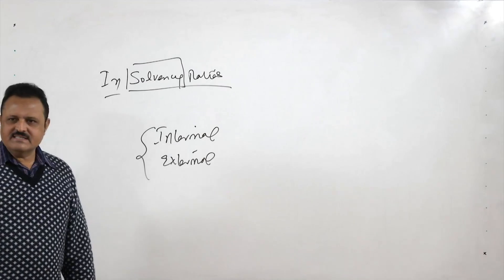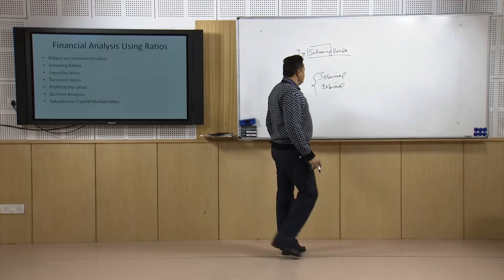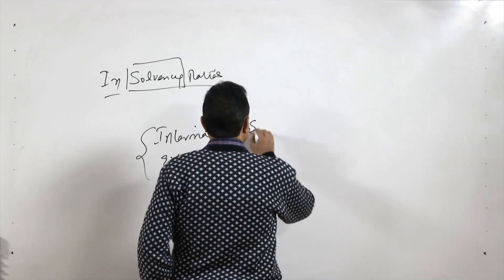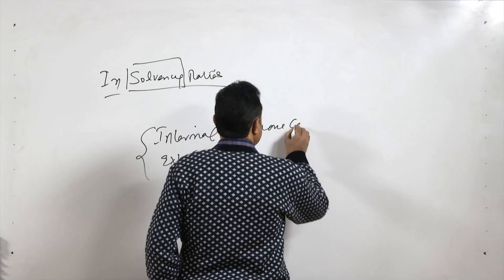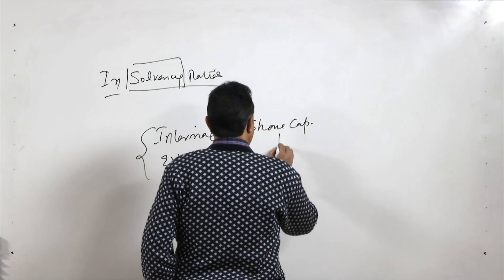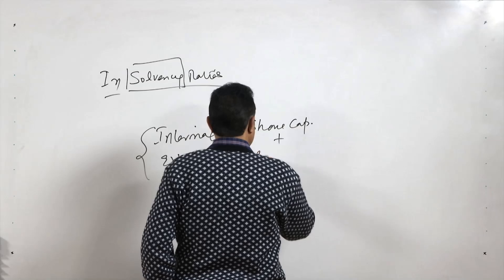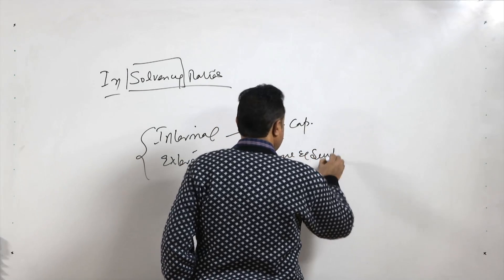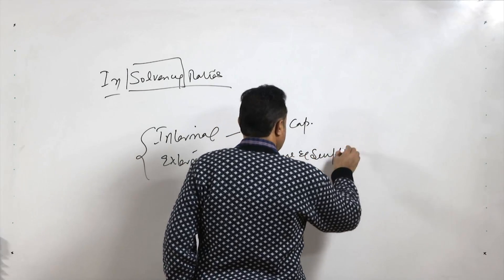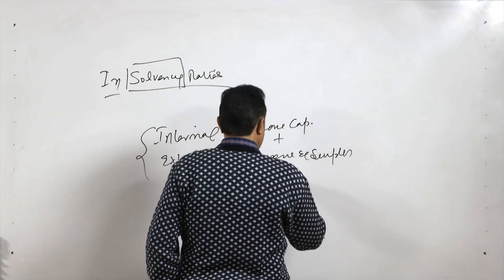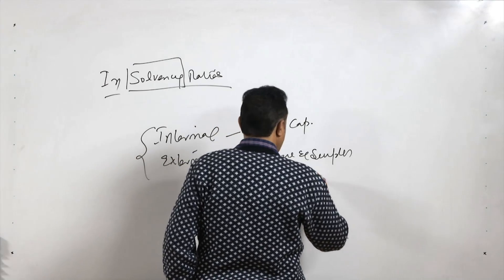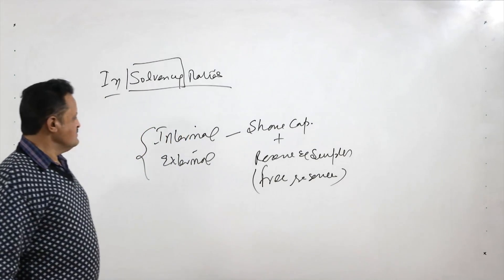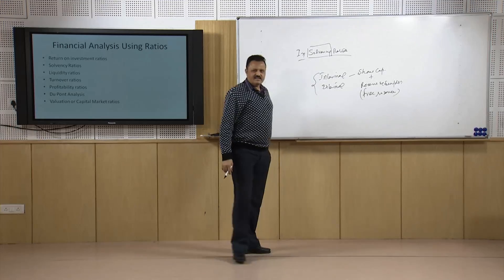Internal sources of funds are the funds that come from shareholders or owners of the company — that is share capital, and then reserves and surplus, also called free reserves. These are the internal funds.